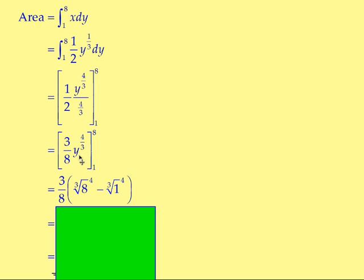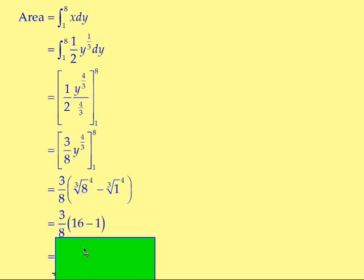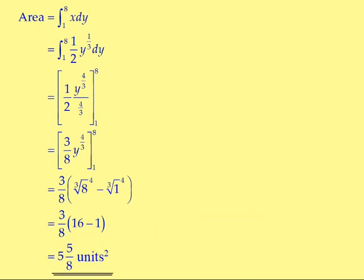Then we have 1 to the power of 4 thirds. Remember flower power: on the bottom you have the root, so that's the cube root of 8 to the power of 4, and the same with the 1 — cube root of 1 to the power of 4. Working that out: cube root of 8 is 2, and 2 to the power of 4 is 16. Cube root of 1 is 1, to the power of 4 is still 1. 16 take away 1 gives 15. So it's 15 times 3 eighths — treating 15 as 15 over 1 and multiplying: 3 times 15 is 45, over 8. And 45 over 8 simplifies to 5 and 5 eighths squared units.